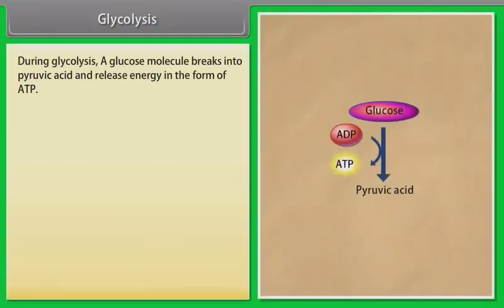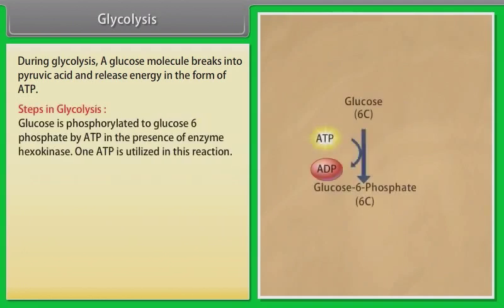During glycolysis, a glucose molecule breaks into pyruvic acid and releases energy in the form of ATP. Glucose is phosphorylated to glucose-6-phosphate by ATP in the presence of enzyme hexokinase; one ATP is utilized in this reaction.